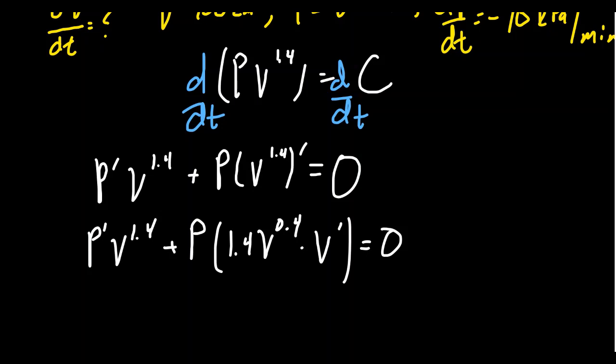Now at this moment, we've finished all the derivative calculations. We're going to plug in the information that we know into this equation. So the change of pressure with respect to time was negative 10 kilopascals per minute. The volume was 400 cubic centimeters. And I'm just going to leave that as 400 to the 1.4 power.